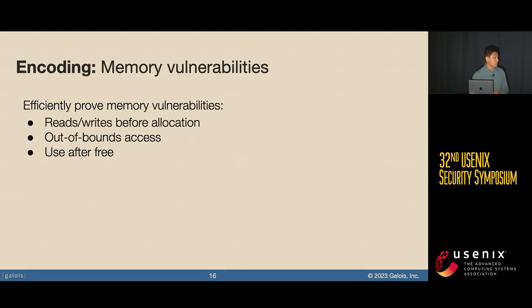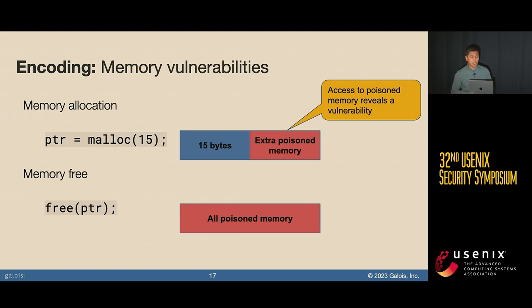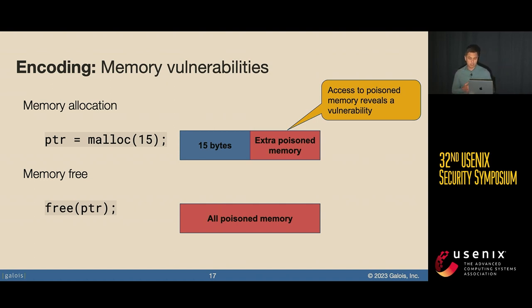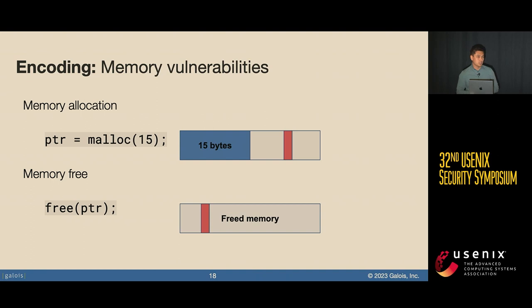We also have an efficient encoding to detect memory vulnerabilities, including out-of-bounds accesses, reads and writes before allocation, and after free. We modify memory allocation and free: whenever you allocate memory, we also poison all memory after the allocation, so any read or write to a poisoned address indicates a memory bug. When you free, you poison all deallocated memory as well. Poisoning all addresses would be expensive, so we use a zero-knowledge advice trick where the prover ahead of time knows which addresses will be violations and only poisons those.